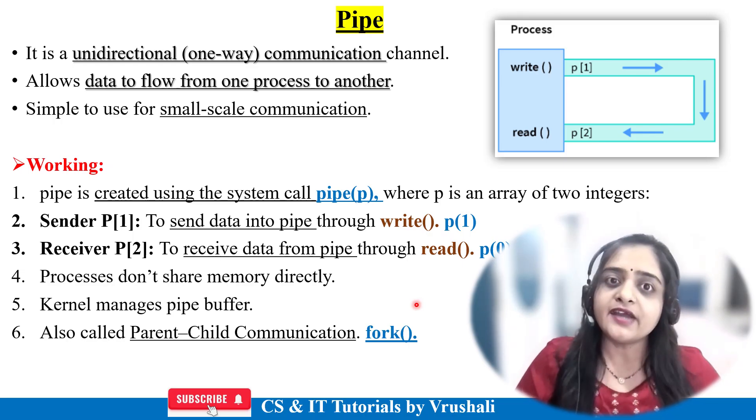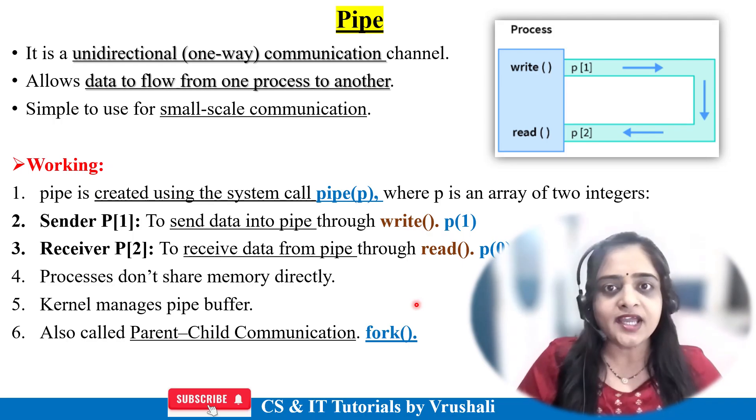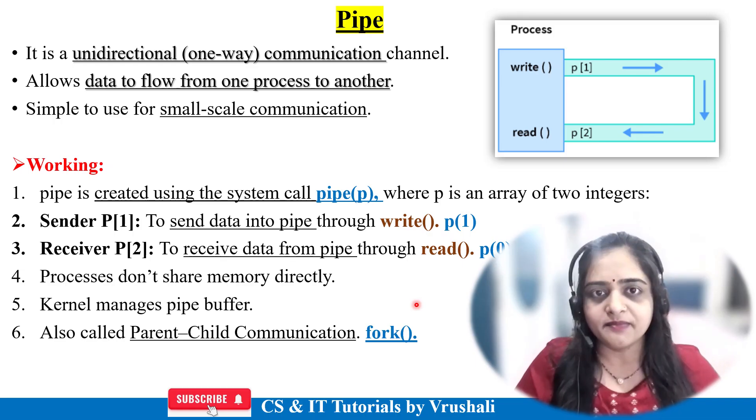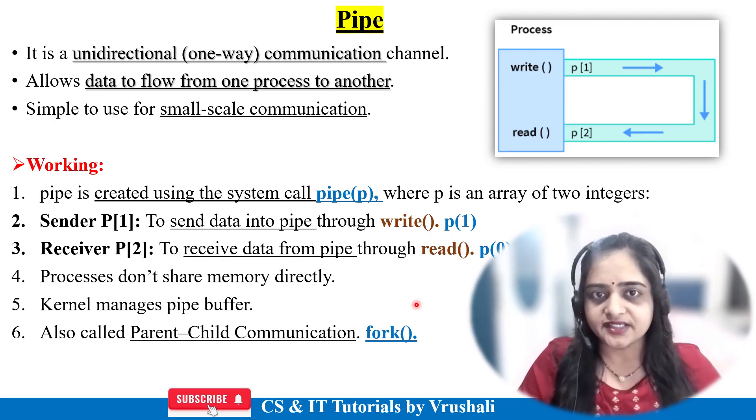Pipe has two types: named pipe and unnamed pipe. Let's discuss these further.